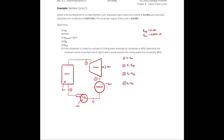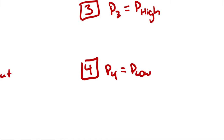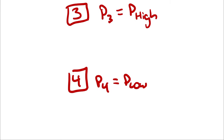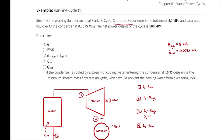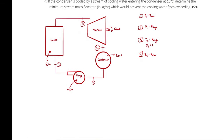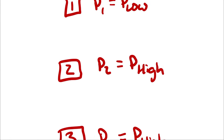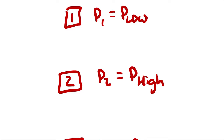I recognize that I was told saturated vapor enters the turbine — that would be state 3 — and I will show that as a quality: x3 is equal to 1 because it's a saturated vapor. And saturated liquid exits the condenser — that would be state 1 — so x1 is equal to 0.